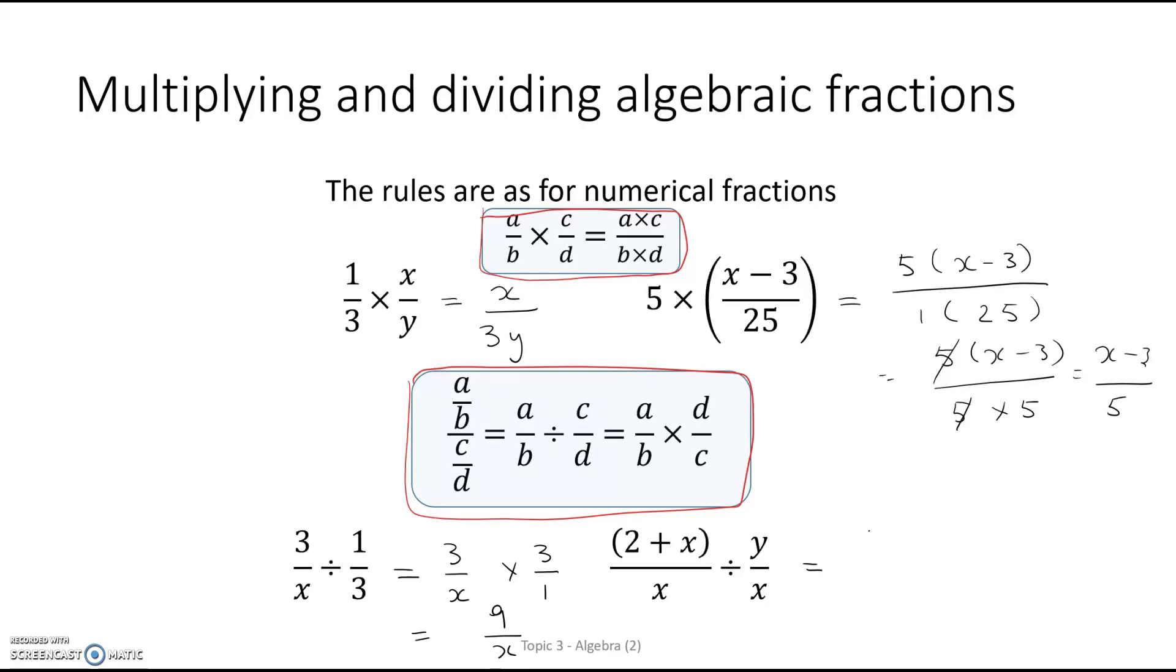This one again, we're going to flip and multiply. So we'll flip and multiply. And then we've got a common factor top and bottom and our final answer is 2 plus x over y. So multiplying and dividing, same rules as before.